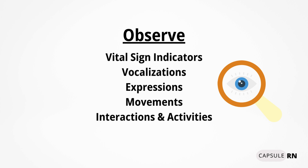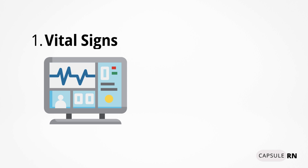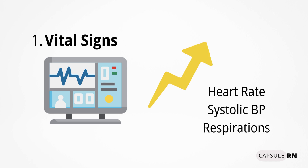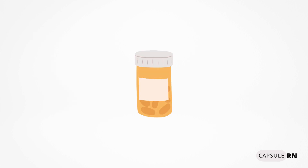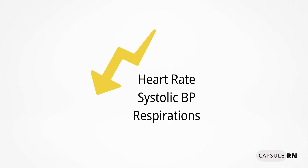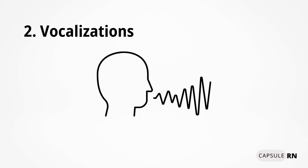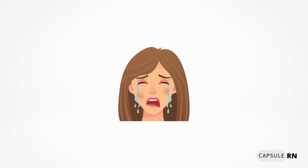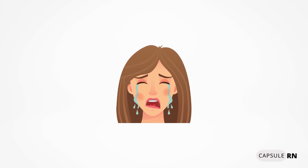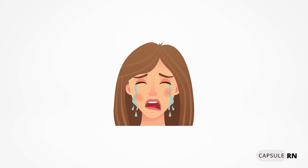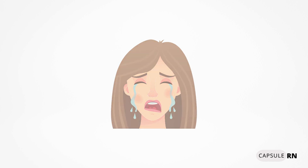Let's talk about each of these observations. First, you will want to observe your patient's vital signs. For acute pain — and note this is for acute, not chronic pain — you will often see an increase in heart rate, systolic blood pressure, and respirations. If the issue causing an increase in vital signs is due to pain, once a patient has been given pain medication to relieve that pain, their vital signs will often return back to their baseline. A second observation is the patient's vocalizations — observe if the patient is moaning, crying, asking for relief, or saying something hurts.